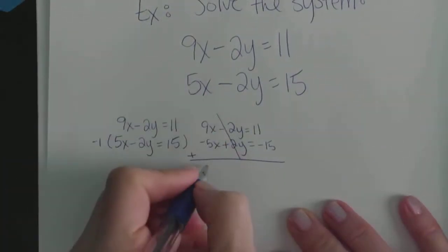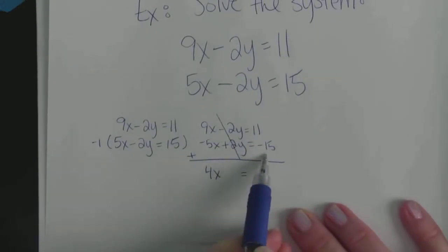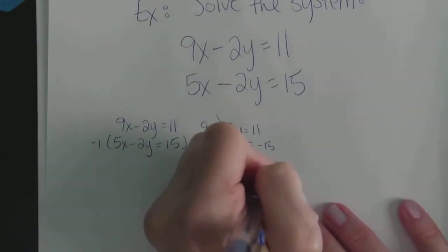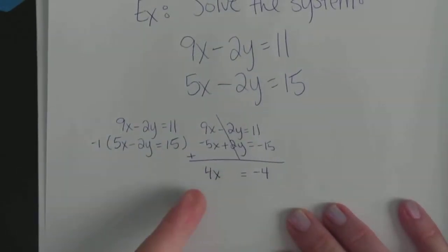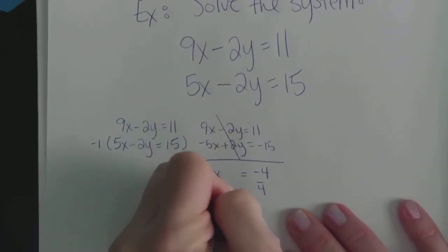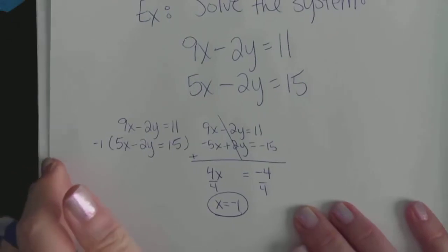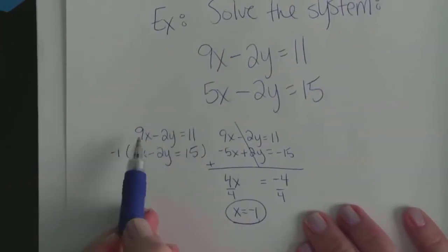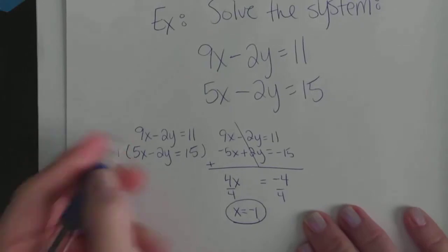That forces a knockout here. When I add 9 to negative 5, I get 4X. And when I add 11 to negative 15, I get negative 4. If I divide both sides by 4, then my X is equal to negative 1. Pretty simple.